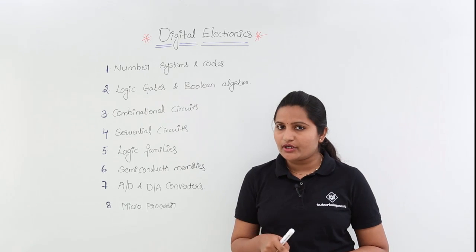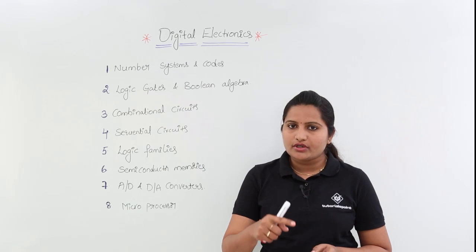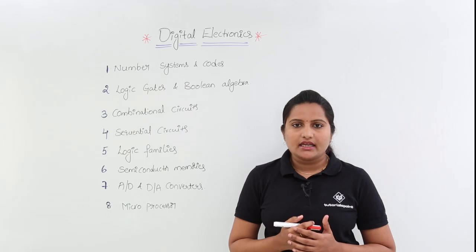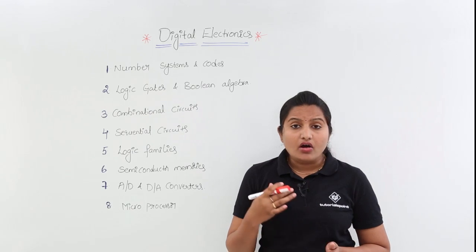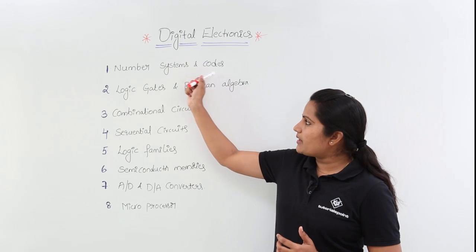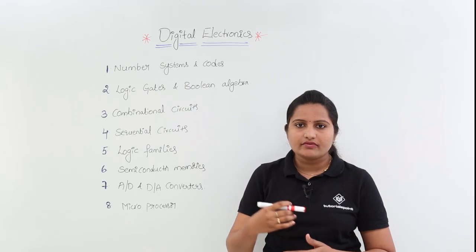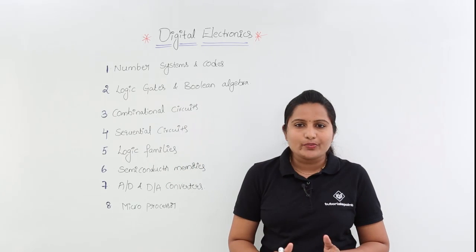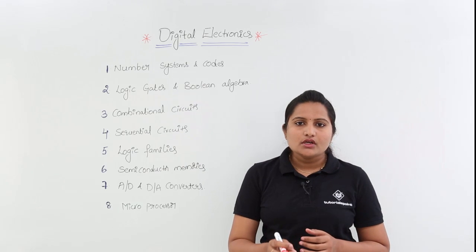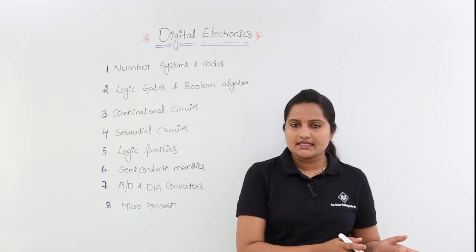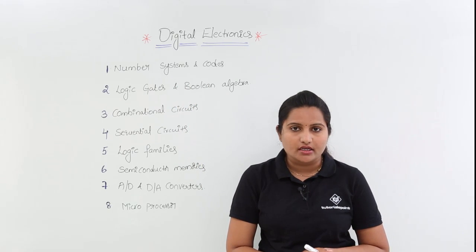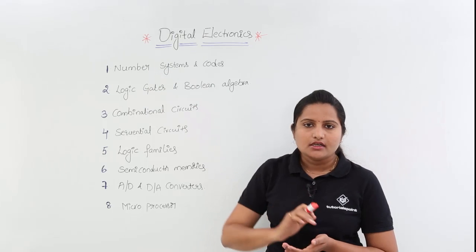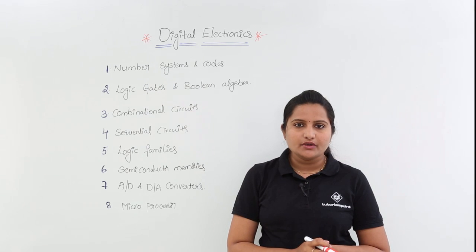In combinational circuits we are going to discuss adders. To design an adder you need to know the procedure of addition, which is covered in the number systems topic. If you want to design a BCD adder or an XS3 adder, you must know those processes — the addition process is covered in number systems and codes, but the designing of the adder is covered in combinational circuits. All the topics are related, so when you go to any video you need knowledge of basics like number systems, codes, logic gates and Boolean algebra. Hope you will find this video series useful — all the best for your exams.